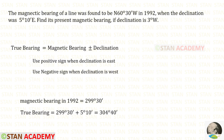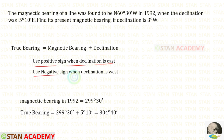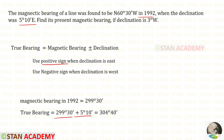We know the formula for the true bearing: magnetic bearing plus or minus declination. We have to use the positive sign when the declination is east, and we have to use the negative sign when the declination is west. In 1992 the declination was 5 degree 10 minutes east. Since it is east, we have to use the positive sign. When we add these two we will get 304 degree 40 minutes.